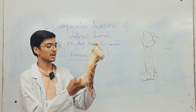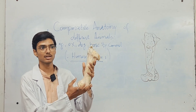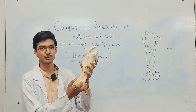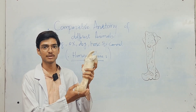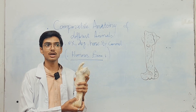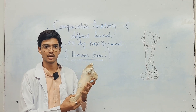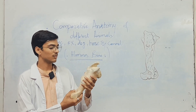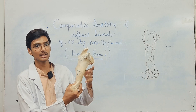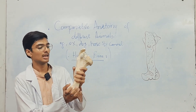It is called stylopodium because it is a single bony element. As you can see, there are no other bones present in it. It is a single large bone. The other stylopodium is the femur, and humerus is also called brachium. So it has proximal extremity, distal extremity, and the shaft.